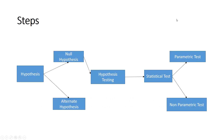Whether our null hypothesis is accepted, we fail to reject the null hypothesis, or we are accepting the alternate hypothesis. Here you can see there are two kinds of hypothesis: null hypothesis and alternate hypothesis. So we are going for hypothesis testing, and to explain this hypothesis testing, there would be statistical tests. We have to use any one of the statistical tests — either it could be a parametric test or a non-parametric test.